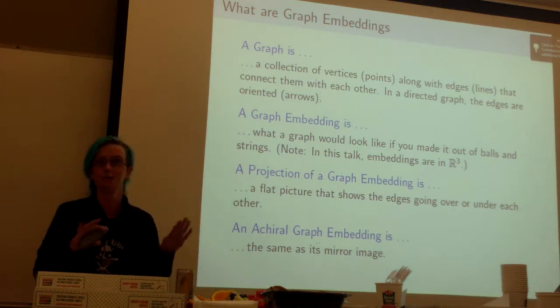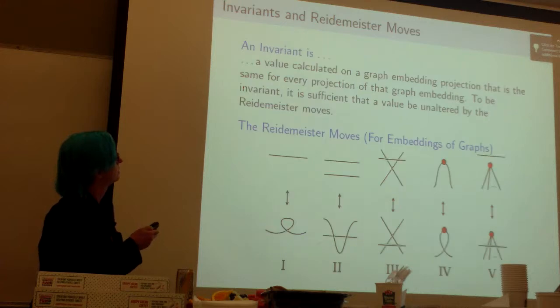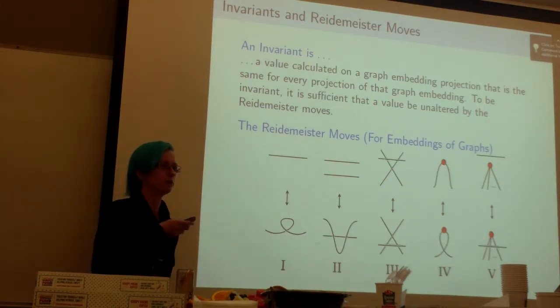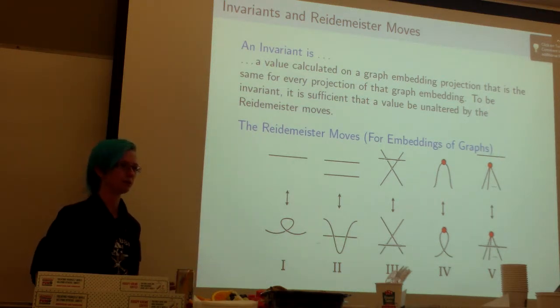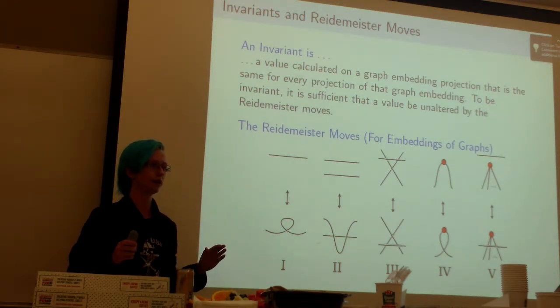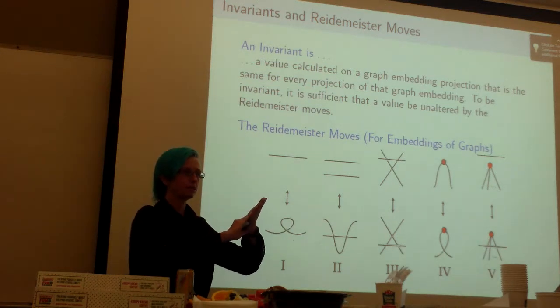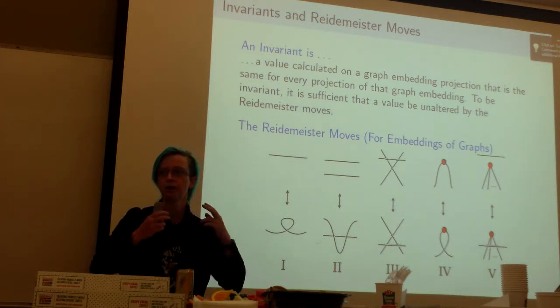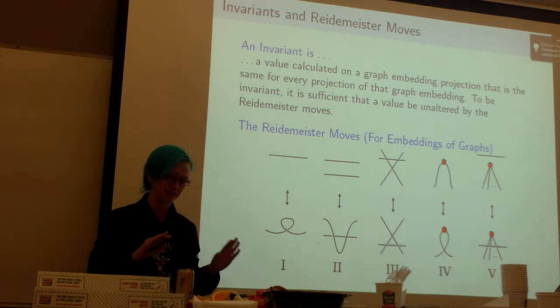Let's take projections and graph embeddings. What's an invariant? Well, invariants are what we use to try to tell these different embeddings apart from each other. These are values where for a given embedding, if you move it around, take a projection and calculate the invariant value on that, no matter what projection you took you should get the same value. That's why it's invariant.